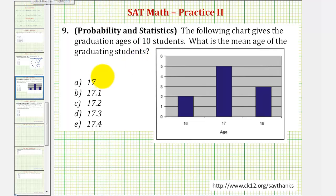So for this question, we need to remember that the mean age would be the average age of the graduating students. So to find the mean or the average, we want to find the sum of all the ages and then divide by the number of students.